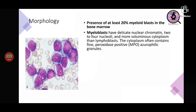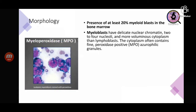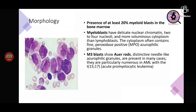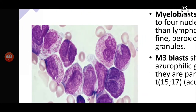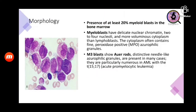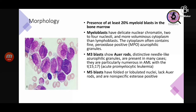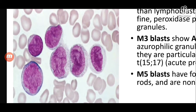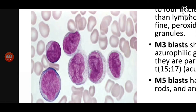Myeloblasts have delicate nuclear chromatin and may have two to four nucleoli. The cytoplasm, compared with lymphoblasts, is more voluminous. Especially from M2 onward, the cytoplasm contains fine azurophilic granules which are myeloperoxidase (MPO) positive. M3 blasts — promyelocytic leukemia blasts — show distinct needle-like crystals called Auer rods, which are particularly numerous in AML with t(15;17). M5 monocytic blasts have folded or lobated nuclei, lack Auer rods, and are non-specific esterase (NSE) positive.